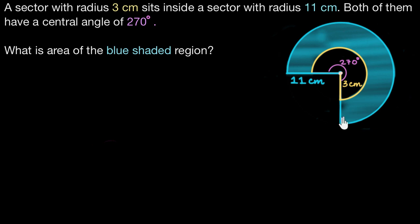So over here we have two sectors. We have this outer sector which has a radius of 11 cm and it makes an angle of 270 degrees at the center right over here. Let's name the center as O. And then we have this inner sector which also makes an angle of 270 degrees at O and the radius of this sector is 3 cm.